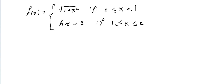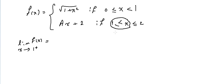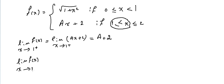For the limit to exist at X equals 1, we need the right-hand and left-hand limits to be equal. The limit of f(X) as X approaches 1 from the right uses the piece aX plus 2, since X is greater than or equal to 1. Substituting X equals 1 gives a times 1 plus 2, which is a plus 2.